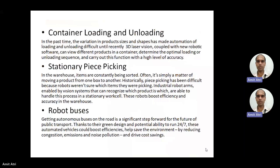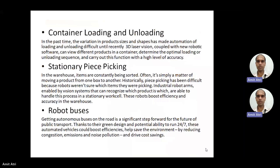For the transportation sector, there are robot buses. These are automated vehicles, so they are robots. They offer high efficiency and are eco-friendly — green — saving the environment, reducing congestion, managing proper emissions and noise pollution, and driving cost savings. That makes them much more effective in the transportation sector.